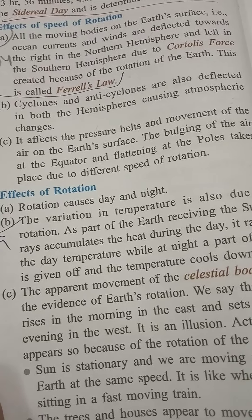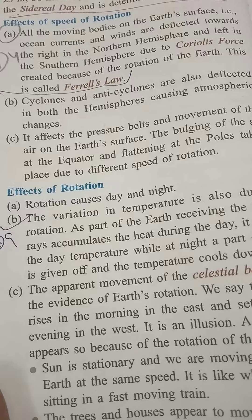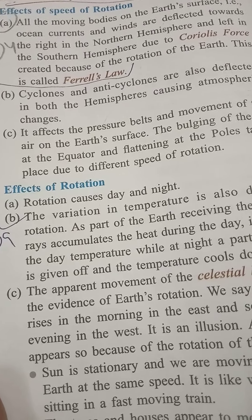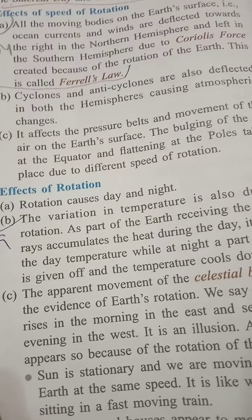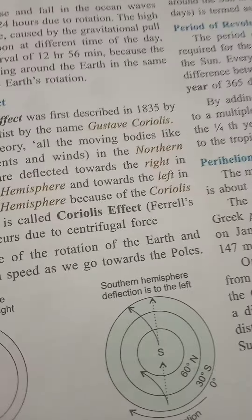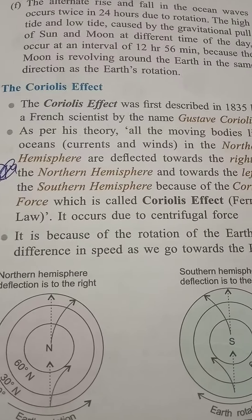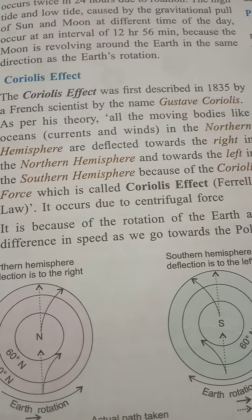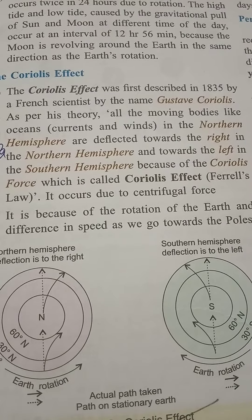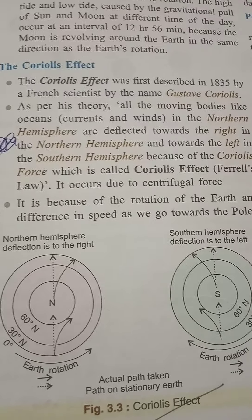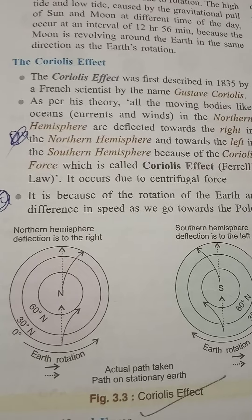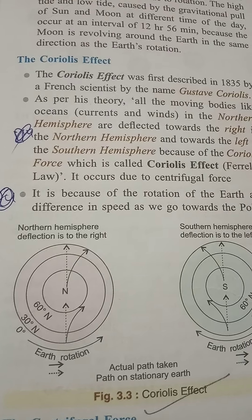The speed of rotation affects all moving bodies on the earth's surface such as ocean currents and winds. They are deflected to the right in the Northern Hemisphere and to the left in the Southern Hemisphere due to the Coriolis force. This is called Ferrell's law of deflection, which is based on the Coriolis effect, first described in 1835 by French scientist Gustave Coriolis. According to his theory, all moving bodies — ocean currents and winds — are deflected right in the Northern Hemisphere and left in the Southern Hemisphere due to the centrifugal force created by Earth's rotation.